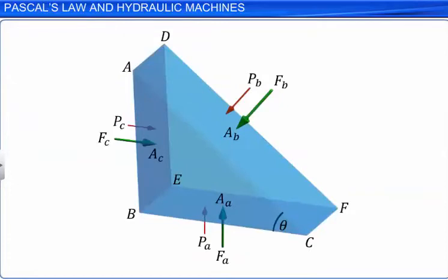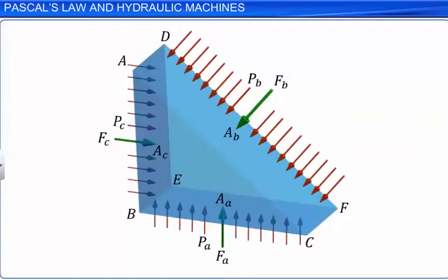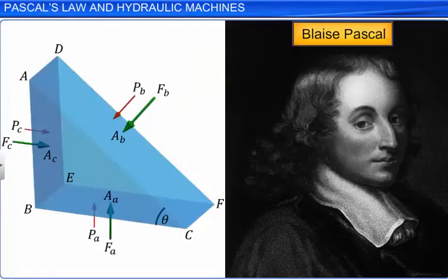Hence, we can conclude that the force against any area within a fluid at rest and under pressure is normal to the area. The pressure exerted at a point by a fluid at rest is equal in all directions. Hence, pressure is a scalar even though it is the ratio of force — which is in general a vector — to area. This is what Blaise Pascal postulated as Pascal's law: when external pressure is applied at a point in a fluid contained in a vessel, it is transmitted undiminished and equally in all directions.